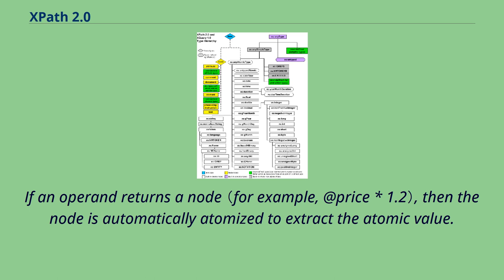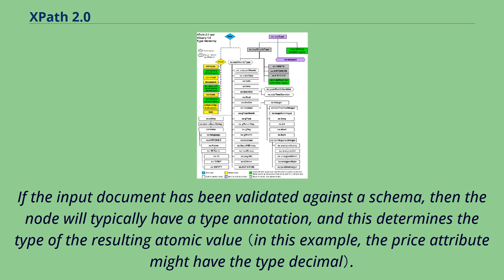Operations such as arithmetic and Boolean comparison require atomic values as their operands. If an operand returns a node, then the node is automatically atomized to extract the atomic value. If the input document has been validated against a schema, then the node will typically have a type annotation, and this determines the type of the resulting atomic value.